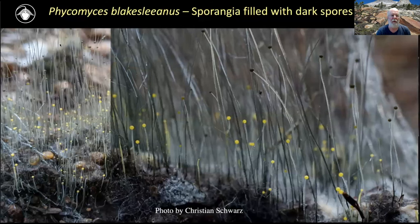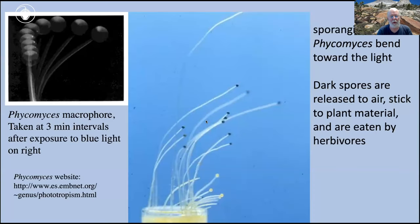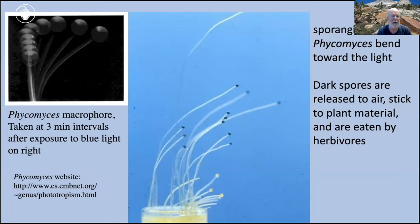Relatives of Pilobolus include Phycomyces, which has very long sporangiophores that stick a little blob of spores out away from the dung and release it to the air. Those spores drift off, stick on foliage, are eaten, and come back out in the dung. Phycomyces is also light sensitive — in fact it's so light sensitive it has become a model system for phototropism. A time-lapse at three-minute intervals shows it growing toward the light. It's sensitive enough to pick up moonlight, making it very good at finding the window where spores would optimally be released.